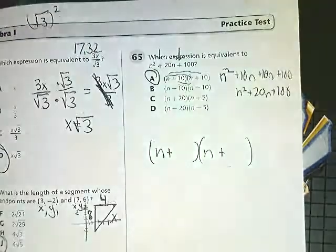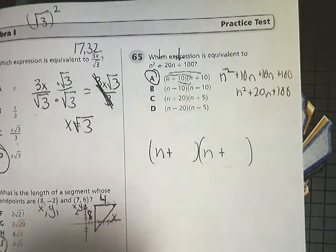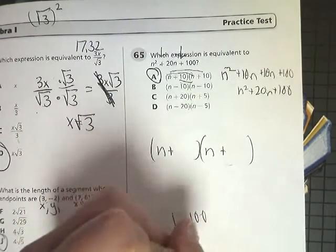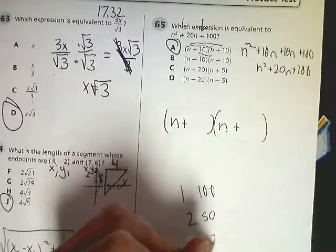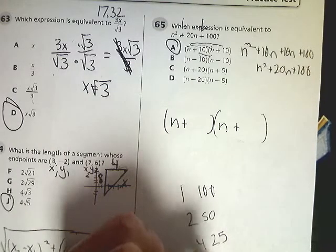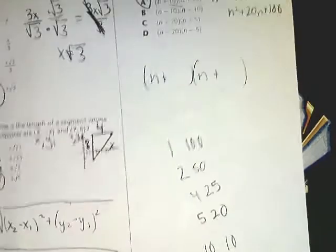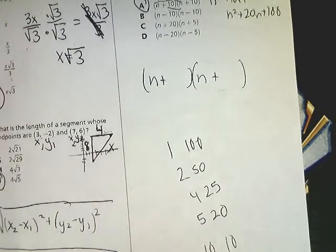Now, if these signs are the same, that means once I factor 100, I'm actually going to be adding the factors to try to get to that 20. Let's skip the blue and go straight to the actual answer itself.